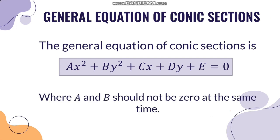A and B should not both be 0 at the same time, because if A and B are both 0, the terms with X squared and Y squared will not exist, which would just leave us with a linear equation.